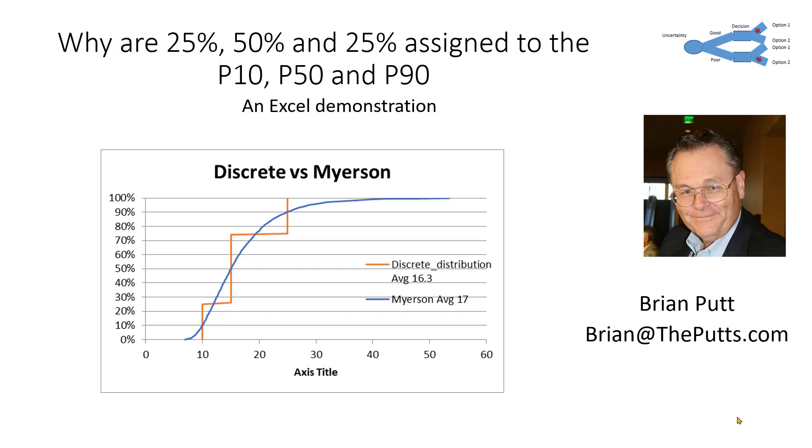This is Brian Putt. Today I'd like to talk to you about why the probabilities of 25, 50, and 25 are assigned to the P10, P50, and P90.